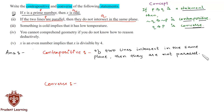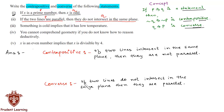The converse of the second statement would be: if two lines do not intersect in the same plane, then they are parallel. This completes the second section.